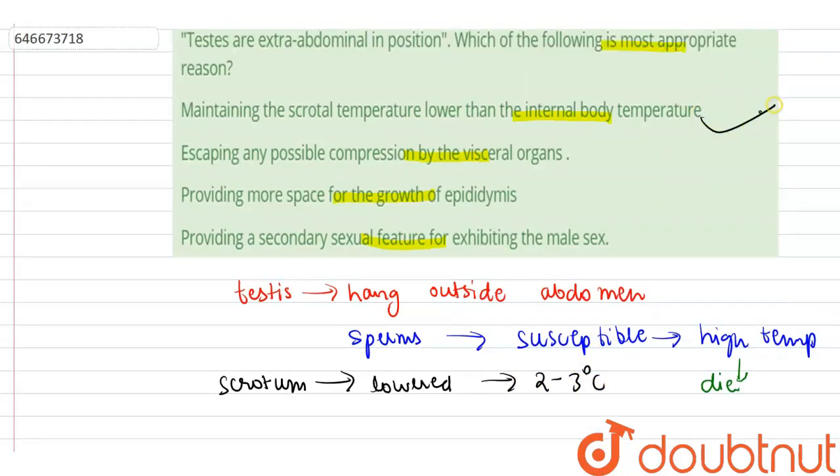And to ensure the survival and growth of sperms, testes are extra-abdominal in position. So the correct option is maintaining the scrotum temperature lower than the internal body temperature for the growth or survival of sperm. This is the appropriate reason why the testes are extra-abdominal in position.